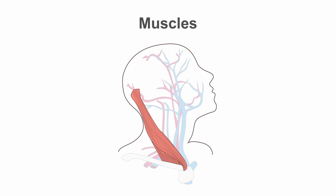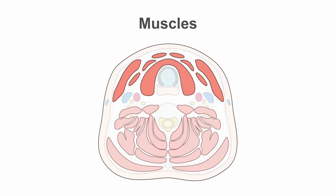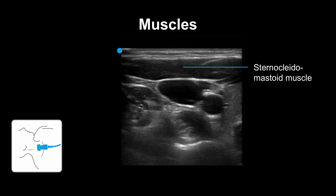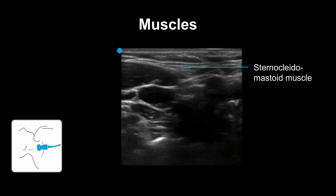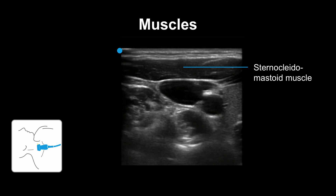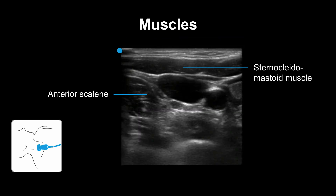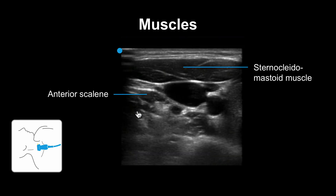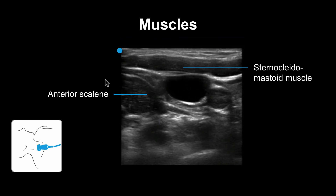Now we can talk about other structures you may encounter in the lateral neck. One of these is muscles. The striated structure you see here is the sternocleidomastoid muscle; the operator is bringing the probe from the clavicle up to the mandible. You can also see the anterior scalene in this view.